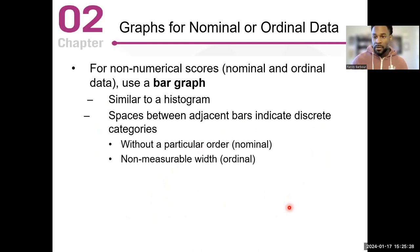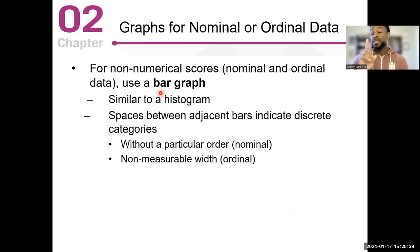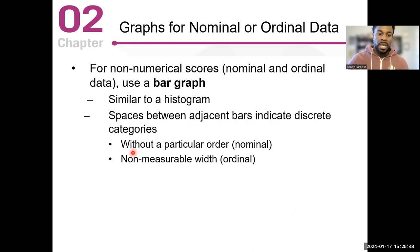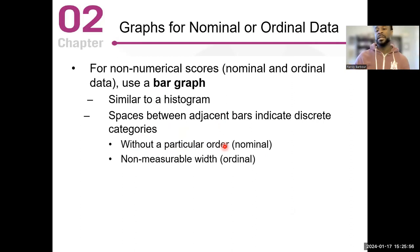Bar graphs — we saw them for the number of students and the type of job they have. That's a bar graph for a nominal variable — very categorical. It's very similar to a histogram; however, there are spaces between the adjacent bars that indicate the discrete categories. Without any particular order, for the jobs example — babysitting, tutoring, grocery store — they're in no particular order. You can put them in alphabetical order or random order, but it shows the group that accounts for those particular variables.